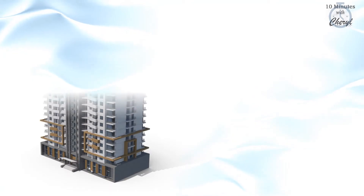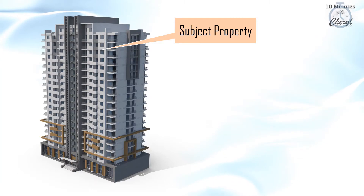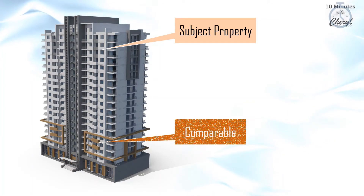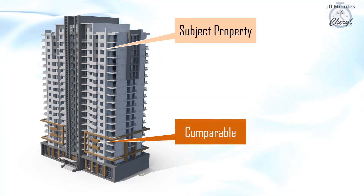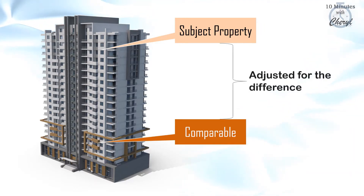For example, if our subject property is located on level 20, and the comparable property that has been recently transacted is located at level 2, the data has to be adjusted accordingly to reflect the differences between the subject property and its transacted comparable property.